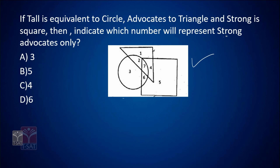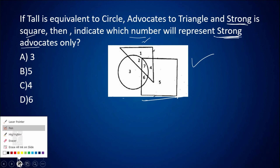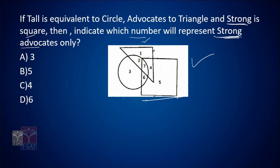The question is asking which area or which number — 1, 2, 3, 4 through 7 — represents a certain area, either overlapping with two figures, three figures, or just a single geometric figure. The question is asking which number represents strong advocates. Strong is equivalent to square, so let us look at the square region.